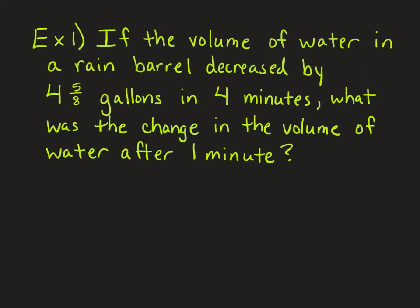Example 1: If the volume of water in a rain barrel decreased by 4 and 5 eighths gallons in 4 minutes, what was the change in the volume of water after 1 minute? So we know that this amount of water spans 4 minutes, and we're wanting to divide it into just 1 minute. So we're going to divide 4 and 5 eighths by 4 minutes.